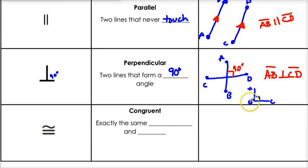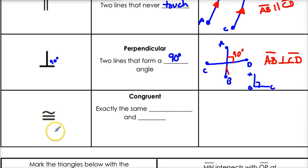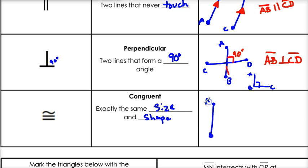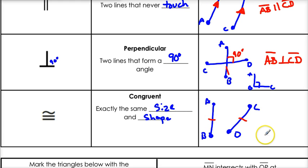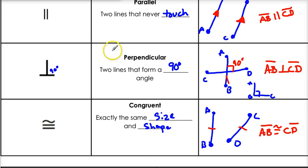And the last one is congruent. You're going to hear me say this so much throughout the year. Congruent is an equal sign with that little squiggle, and that means exactly the same size and shape. That's what congruent means. So let's do our final example: we've got line AB and line CD. These look about the same size. What we're going to use is hash marks — these hash marks tell me that they're congruent. So now I could say that line AB is congruent to line CD.